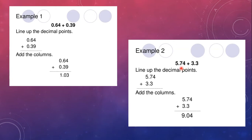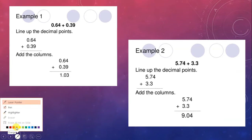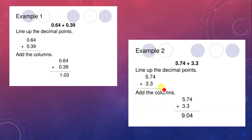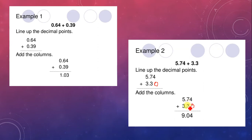For example 2, the first number 5.74 has two decimal places but 3.3 has only one, so we must make their decimal places equal by putting a zero — making it 3.30. Now add: 4 plus 0 is 4, 7 plus 3 is 10 — carry 1, then 5 plus 1 is 6, and 3 plus nothing is 3. The answer is 9.04.